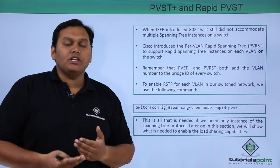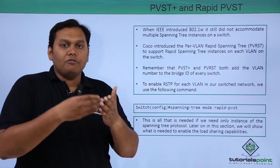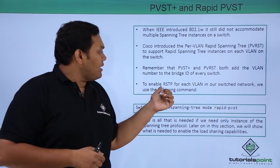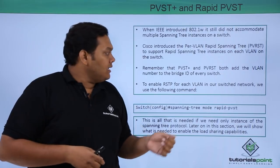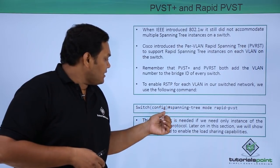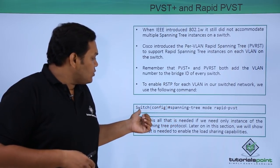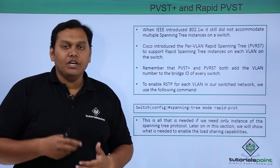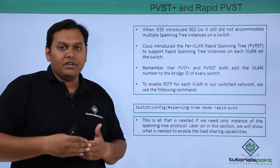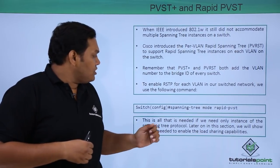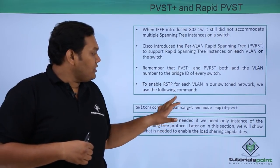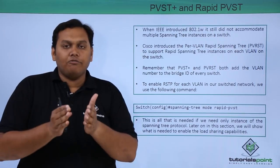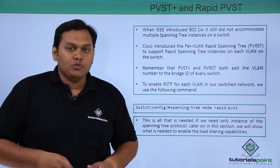Both PVST+ and RPVST (Per VLAN Rapid Spanning Tree Protocol) add the VLAN number to the bridge ID of every switch. To enable RSTP for each VLAN, use the configuration mode command: spanning tree mode rapid-pvst. This enables Rapid PVST on the switch, making it work on each and every VLAN instance on the switch.